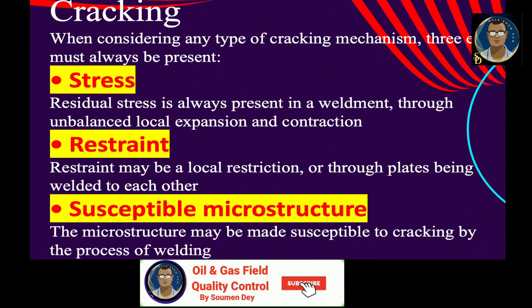The first element is stress — residual stress is always present in a weldment through unbalanced local expansion and contraction. The second is restraint, which may be a local restriction or through plates being welded to each other. The third is a susceptible microstructure — some metals are always prone to cracking, for example cast iron. If all three factors are present, you can expect cracking. You need to eliminate at least one of these three causes.